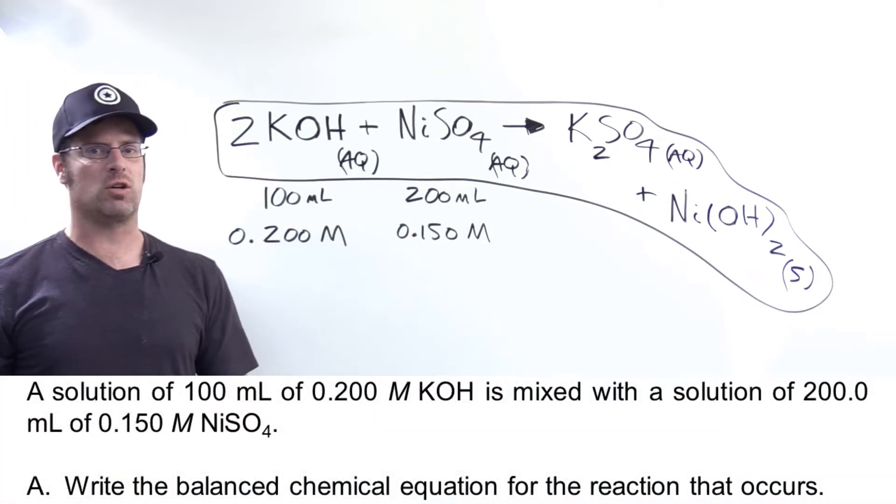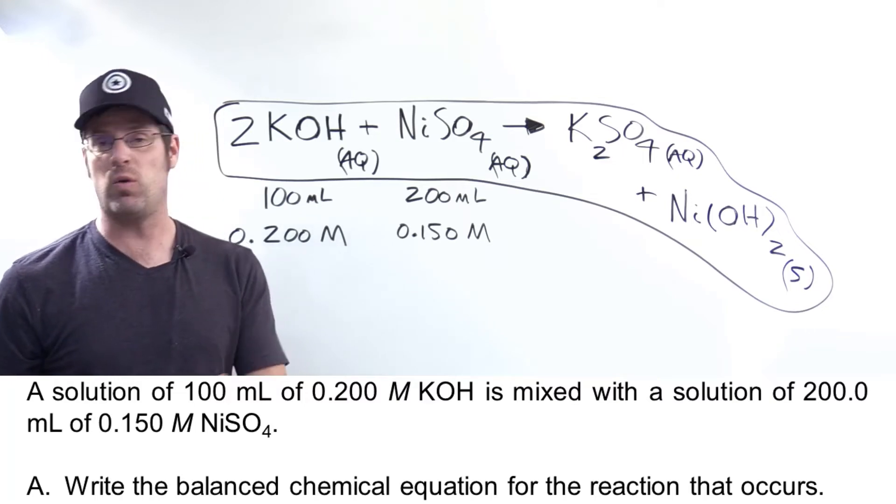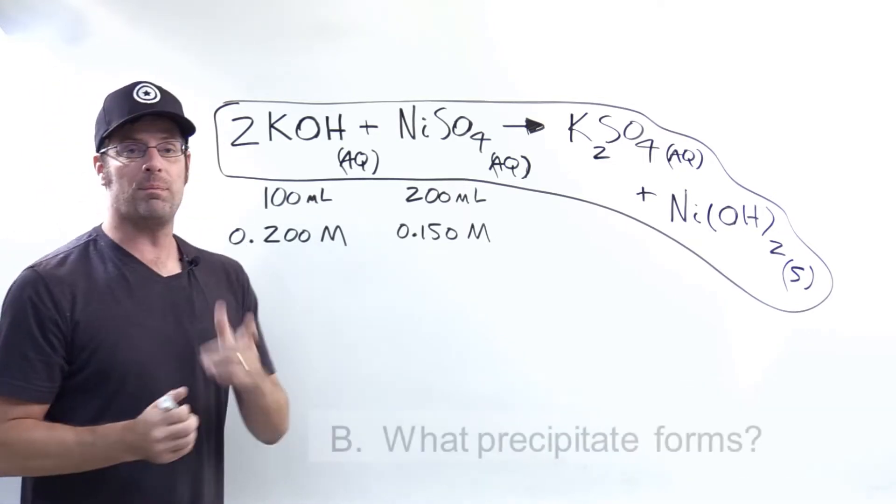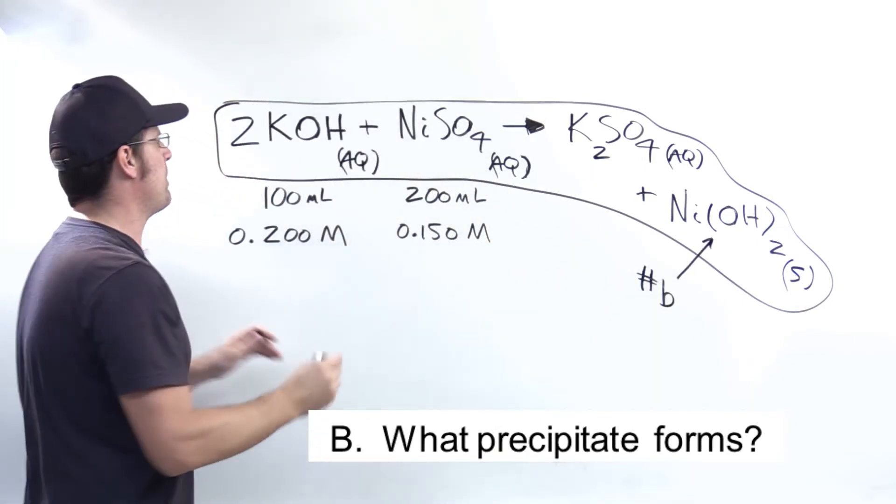Now this complete ionic equation that I've written, as messy as it may be, is the answer to part A of our question, which takes us to part B. What precipitate forms? As we just saw, the precipitate is the nickel hydroxide solid. So that's the answer to part B.